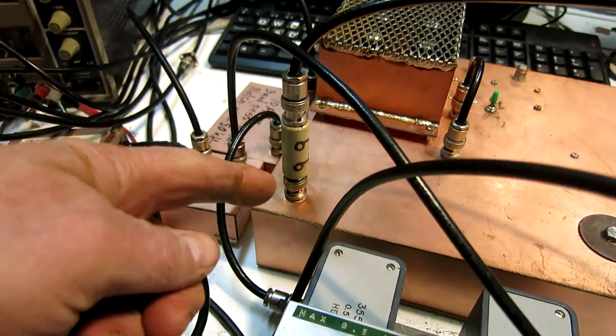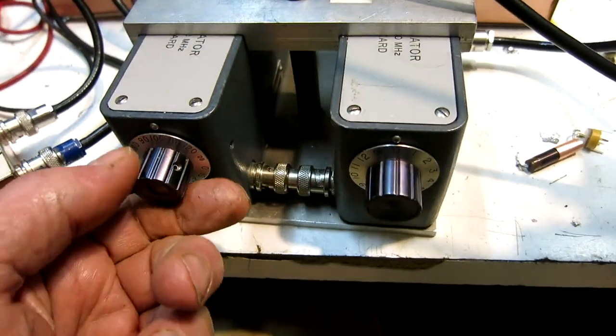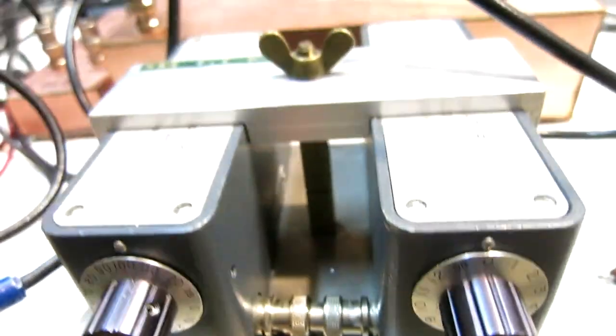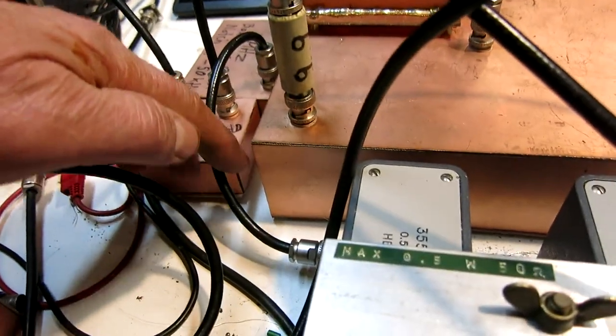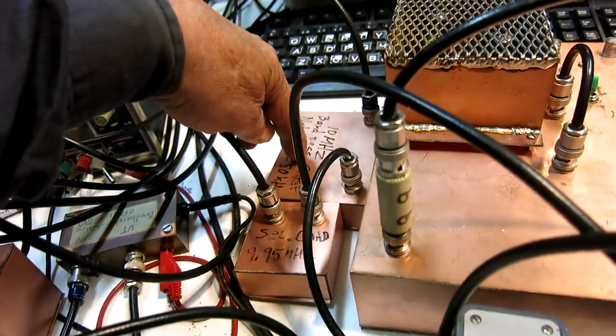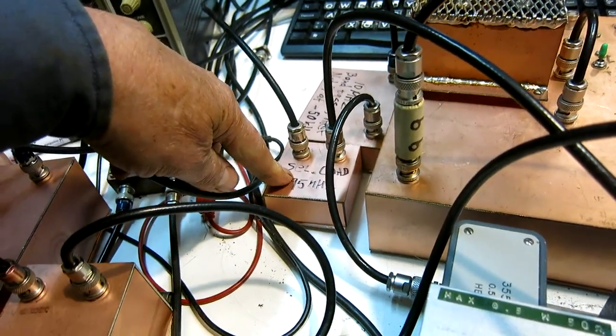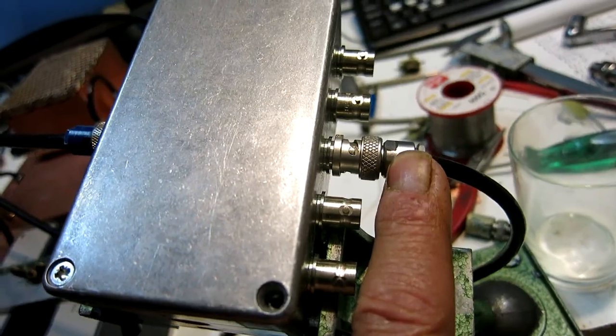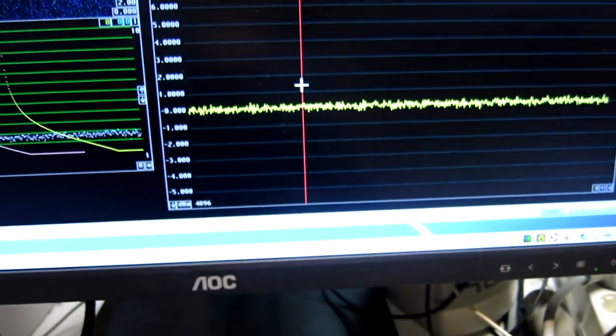Now the signal generator first goes through this 3 dB attenuator. Then through the HP stepped attenuator. And I have set it to 100 dB to not let any signal through, just to present the 50 ohm load to the receiver. And then the signal goes through the notch filter, a three quarter wave, and then the selective load to make sure I have 50 ohms here on both frequencies. The straight through wire and into the test system.